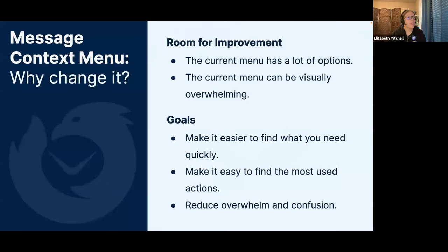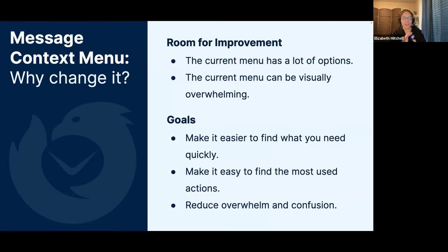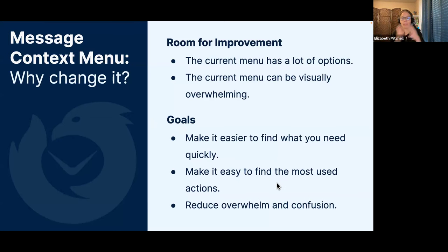The current menu has a lot of options and could be visually overwhelming — those are the places where we saw room for improvement. This is affirmed by Bugzilla posts from community members saying our context menus could really be cleaned up. Our goals were to make the context menu easier to navigate, make it easy to find the most used actions, and try to reduce overwhelm and confusion.